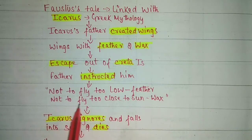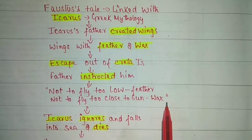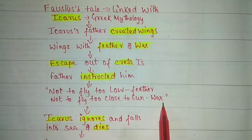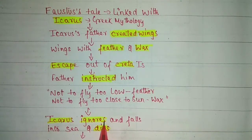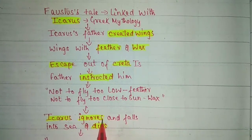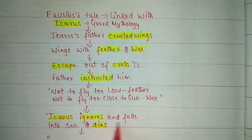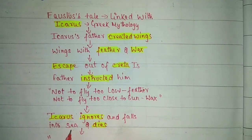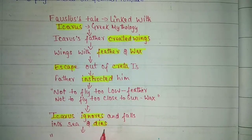Next, not to fly too close to the sun because the wings are made of wax and they might get melted. But Icarus ignores his father's instruction and goes closer to the sun. His wings get melted and he is drawn into the sea, and eventually he dies.